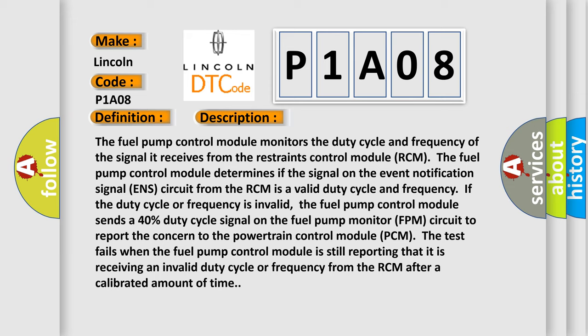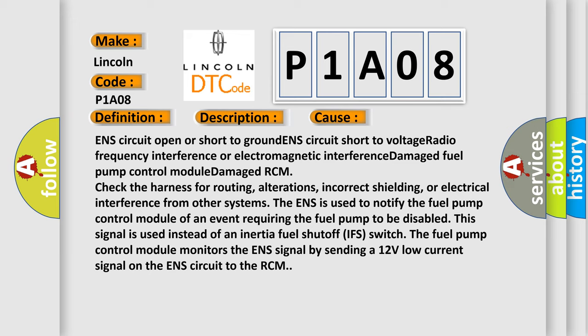The test fails when the fuel pump control module is still reporting that it is receiving an invalid duty cycle or frequency from the RCM after a calibrated amount of time. This diagnostic error occurs most often in these cases: ENS circuit open or short to ground, ENS circuit short to voltage, radio frequency or electromagnetic interference, damaged fuel pump control module, or damaged RCM. Check the harness for routing, alterations, incorrect shielding, or electrical interference from other systems.